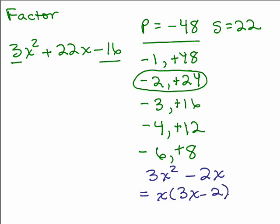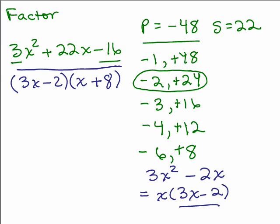That's one of the factors, so 3x minus 2 is one of the factors. 3x times what will give you 3x squared? x, and negative 2 times what will give you negative 16? Plus 8, and that should be the correct factorization.